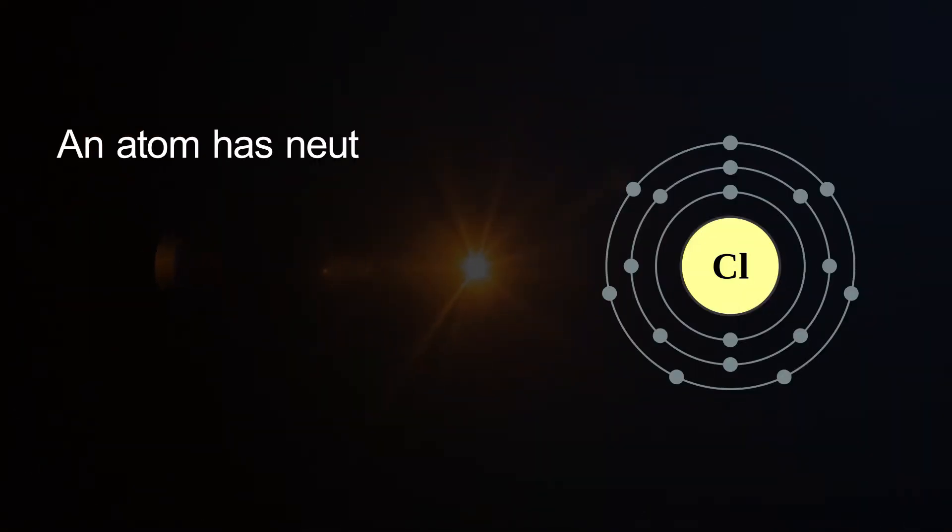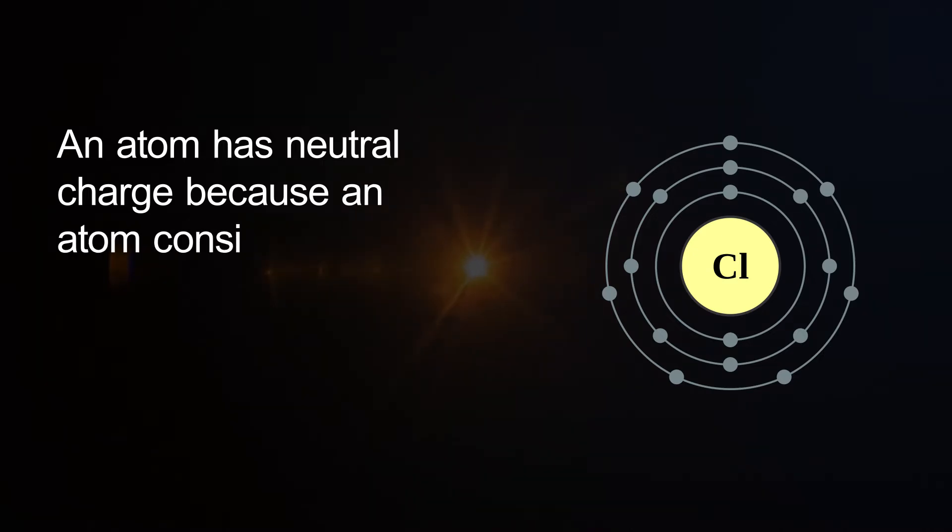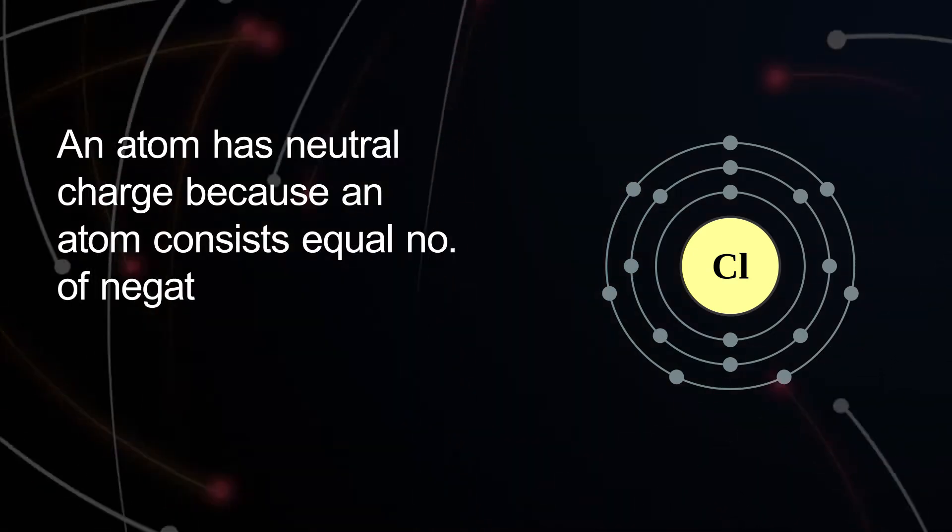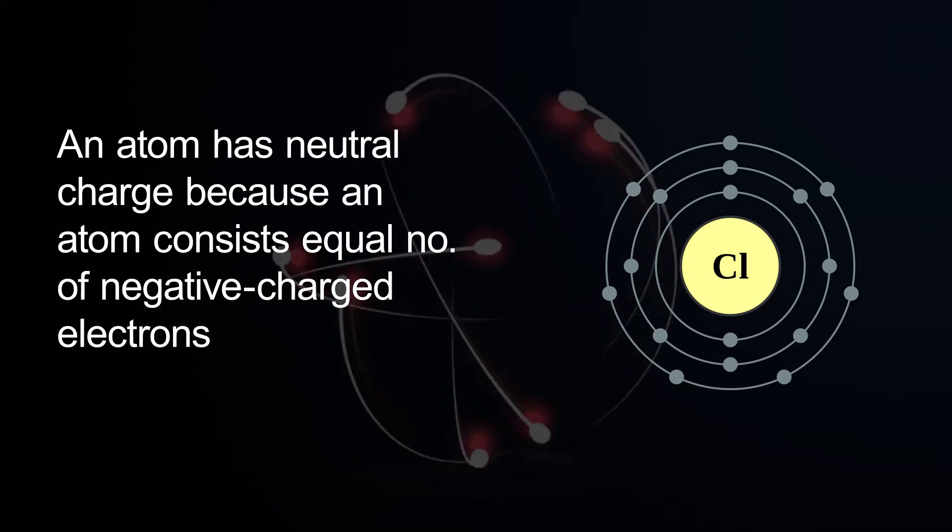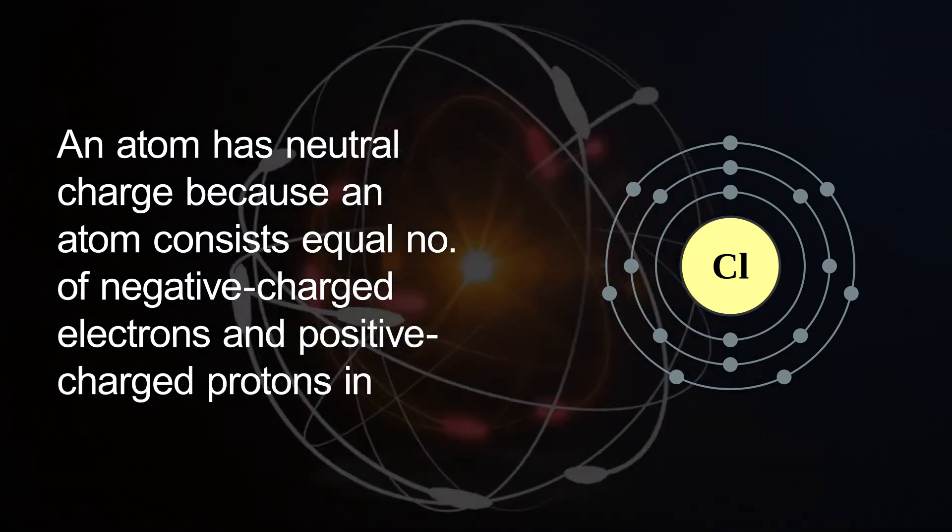An atom has neutral charge because an atom consists of an equal number of negatively charged electrons and positively charged protons in it.